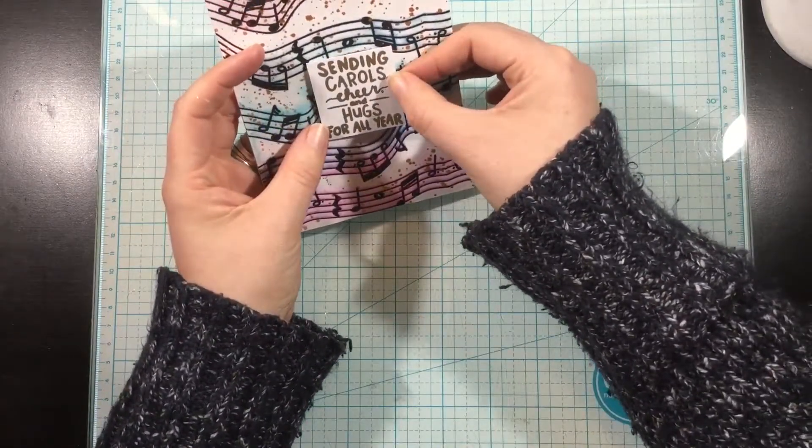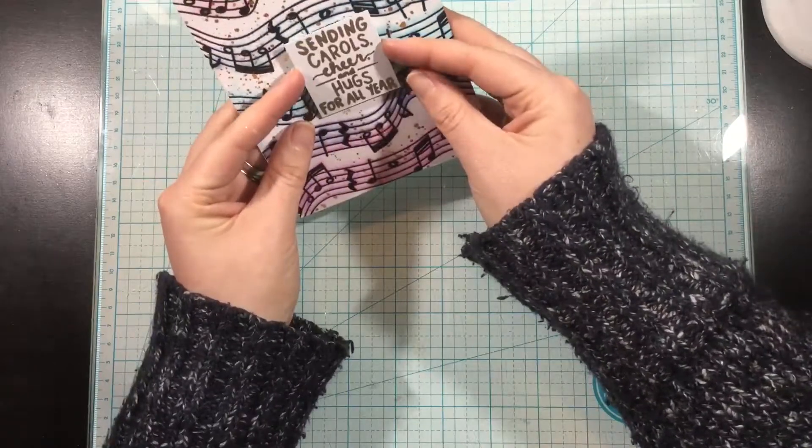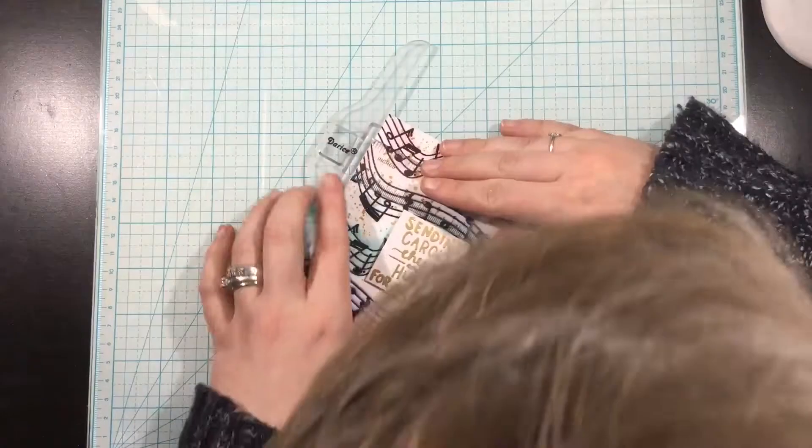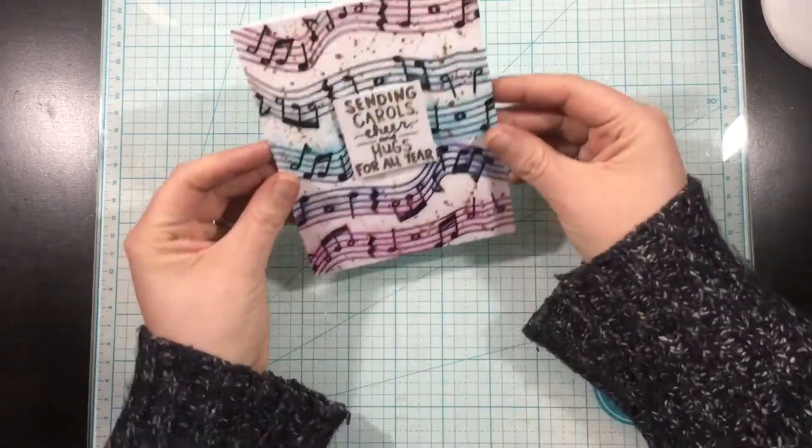I heat embossed a gold sentiment from the Caroling Squad stamp set and just trimmed that sentiment out into a square. I'll use some foam tape at the back to pop this up a little bit, and that's really going to complete this clean and simple card.